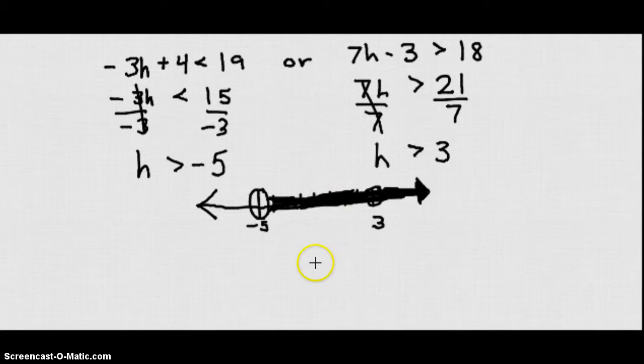So my solution set basically based on that graph becomes h such that h is greater than negative 5. It's not needed to say it's greater than 3, because if it's greater than negative 5 we also assume it's greater than 3.